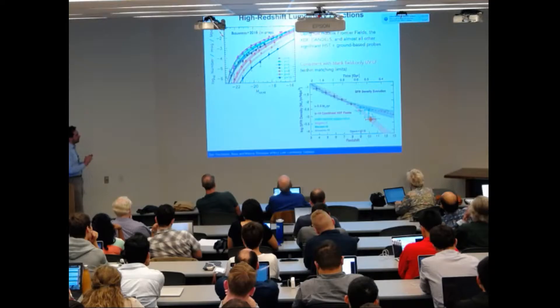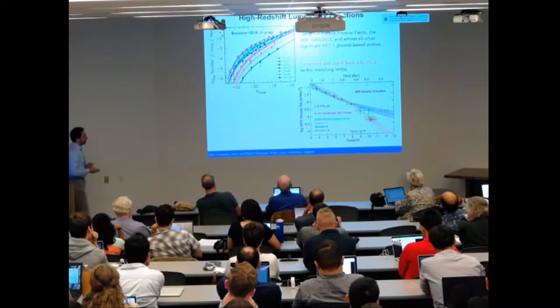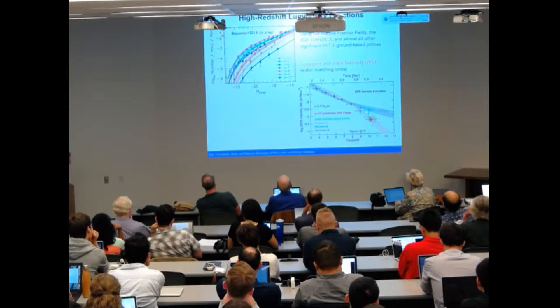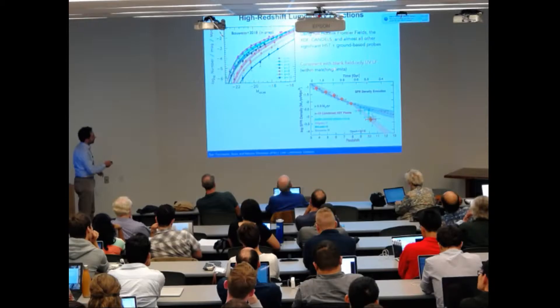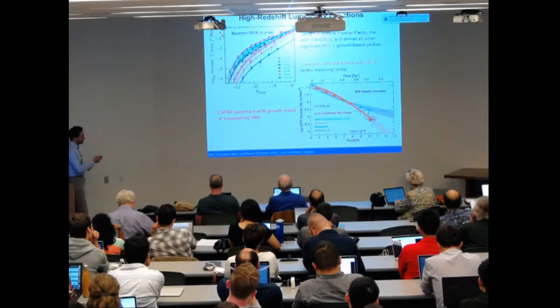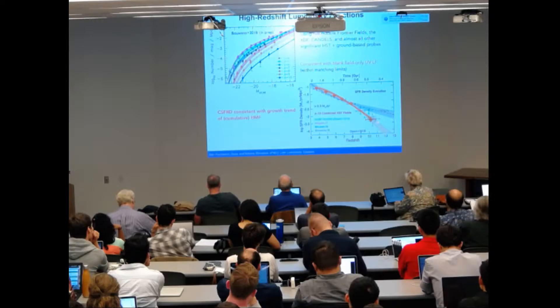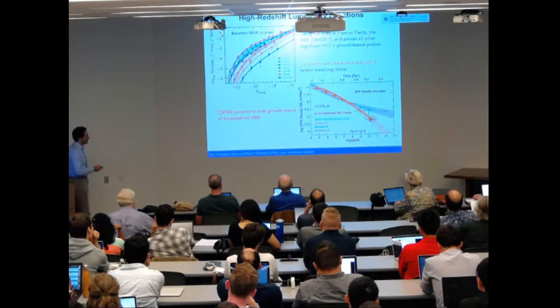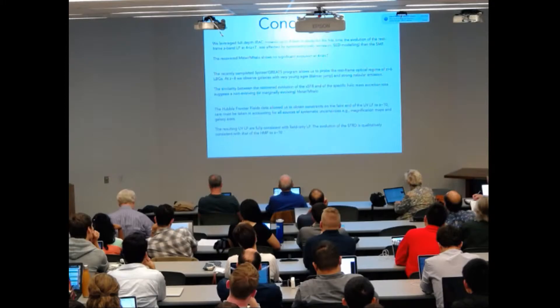The very good news is that this luminosity function done using the full data set from the Hubble Frontier Field, so cluster and field data, are totally consistent with the field-only luminosity function. When we look at what they show on the star formation rate density versus redshift plane, we see that the star formation rate density basically follows the growth of the halo mass function, at least over this redshift range between three and ten.